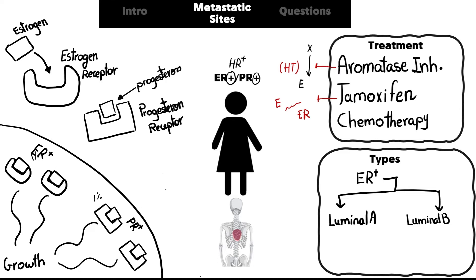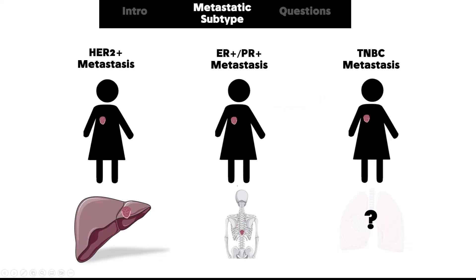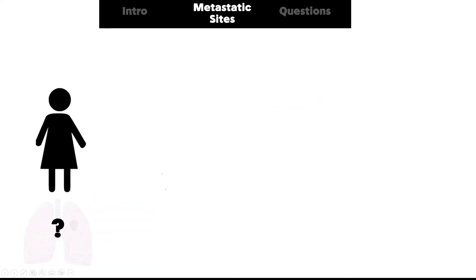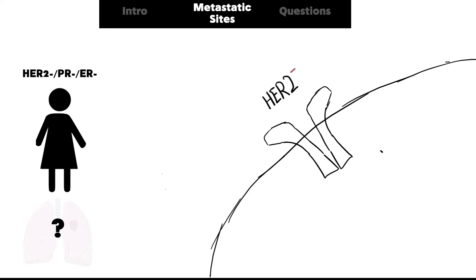The types of ER positive breast cancer cells are luminal A and luminal B. Luminal A is characterized by PR positivity and better prognosis. Luminal B is characterized by low PR expression — less than 10 percent — or PR negativity, signifying the complete or near-complete absence of PR.